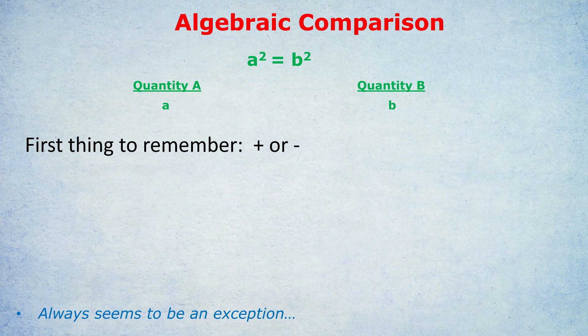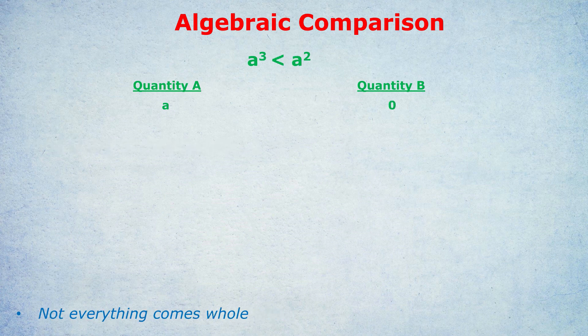That was just the warm-up — it's going to get harder and harder. This next question: A cubed is less than A squared. What's bigger, A or 0? Pause the video if you want to try it yourself.